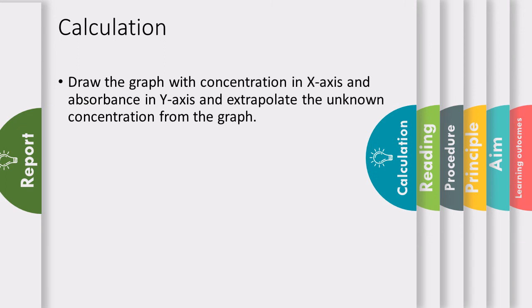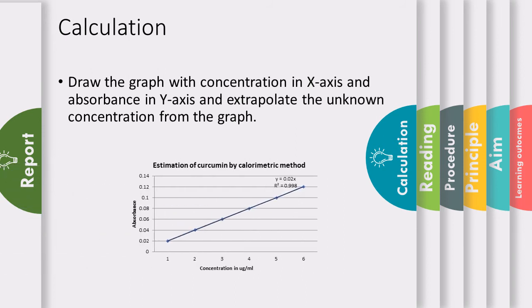For calculation, we will prepare a graph with concentration on the x-axis and absorbance on the y-axis, and extrapolate the unknown concentration from the graph. The graph is drawn using an Excel sheet with the intercept set at 0 so that the line passes through the origin. If the absorbance of the unknown sample is known, we extrapolate to find the concentration — approximately 3.5 microgram per ml in this example.